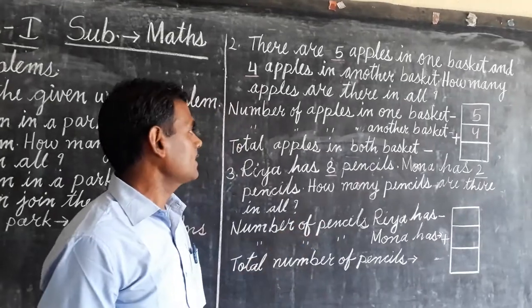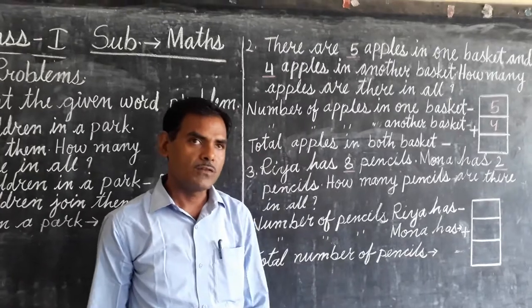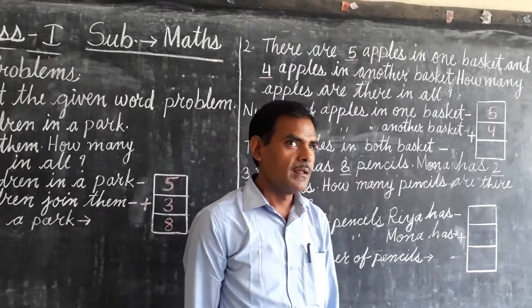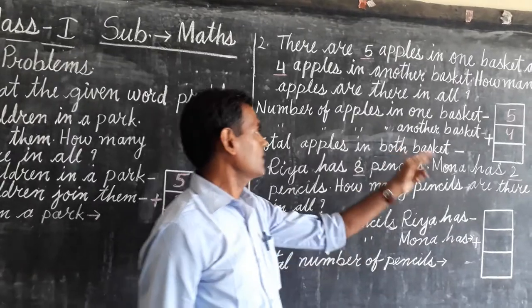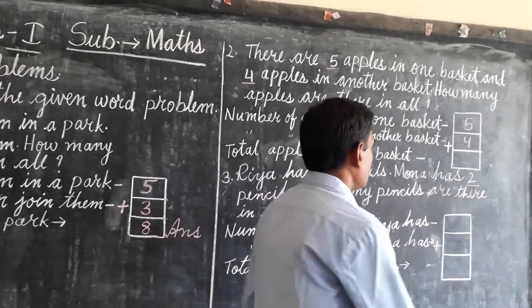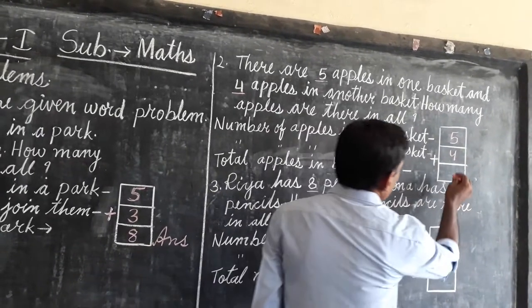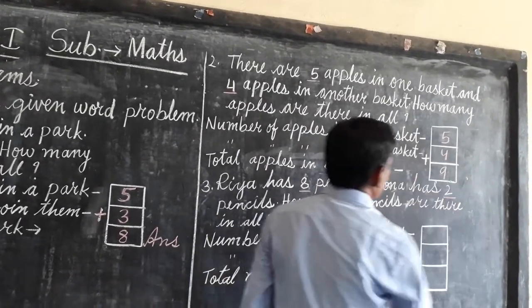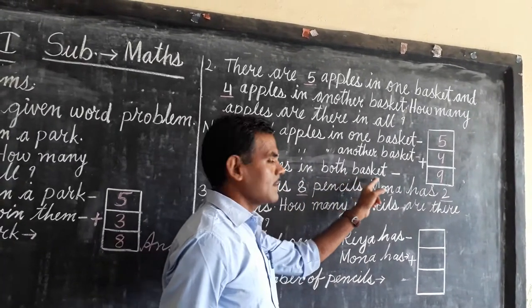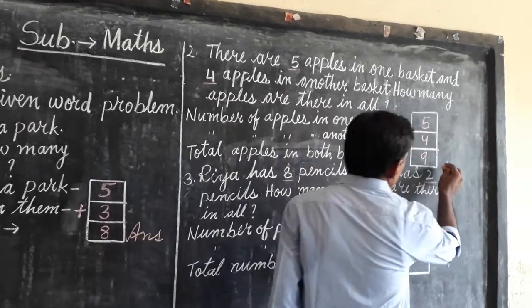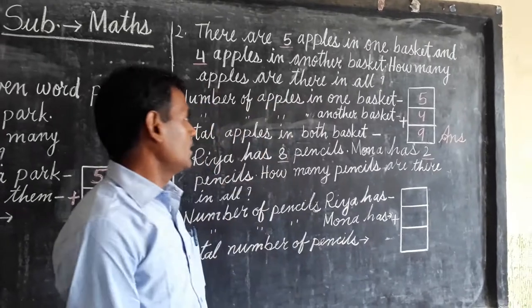So how many apples are there in all basket? What do you do — plus or minus? Now write: 5 plus 4 equal to 9. Total apples in both baskets is 9. This is your answer.